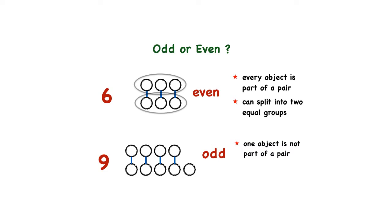And if we try to split the circles into two equal groups, we can't do it. So with an odd number, we can't split it into two equal groups.